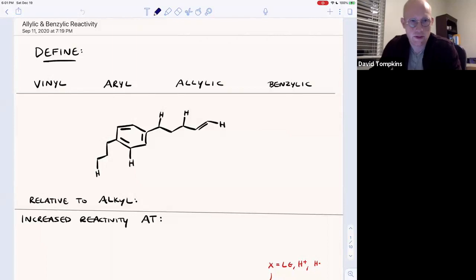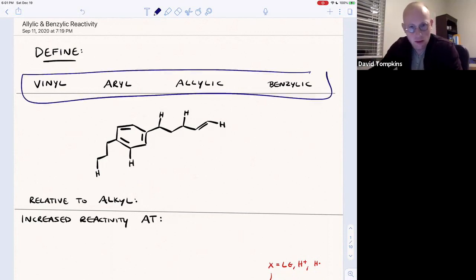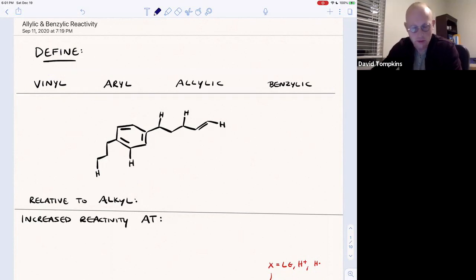So in this lecture we're going to begin to talk about the various reactivities, or lack thereof, of vinylic, aryl, allylic, and benzylic positions, and these undergo a variety of reactions.